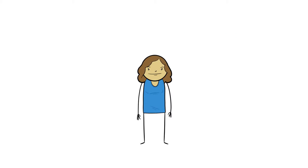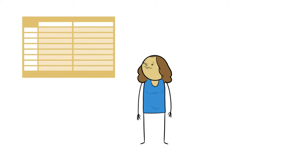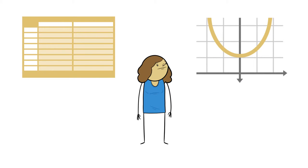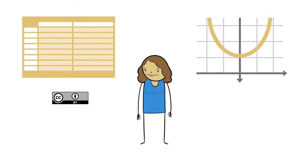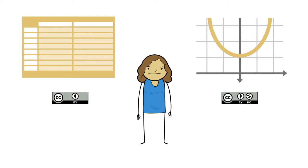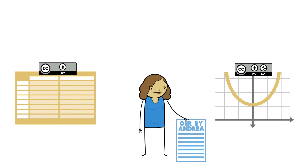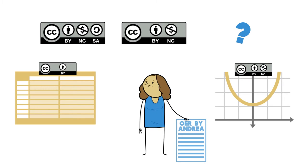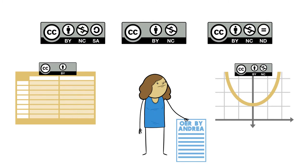Andrea has found two resources that she wants to use with her own writing. One is an extensive table with useful information for students. The other is a diagram that shows the relationships among complex variables in a way that makes them easier for students to grasp. The table is found in a work with an attribution license, and the diagram carries an attribution non-commercial license. She is confident she can use these assets for her open textbook chapter, but she wonders what licenses she can apply to her finished work. Considering the stipulations of the BY-NC license, she figures she can use a BY-NC, a BY-NC-SA, or a BY-NC-ND license.